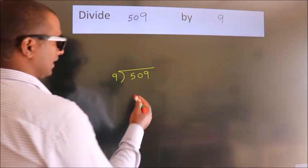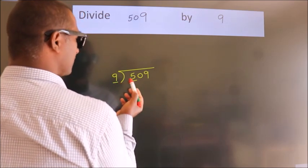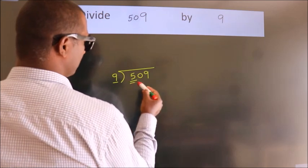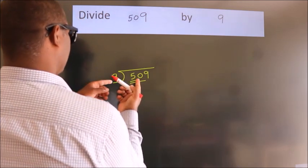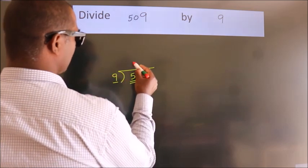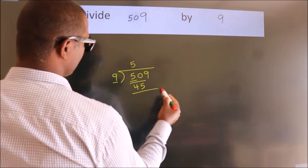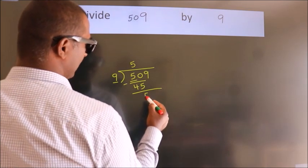Next, here we have 5, here 9. 5 is smaller than 9, so we should take two numbers: 50. A number close to 50 in the 9 table is 9 fives, 45. Now we subtract and we get 5.